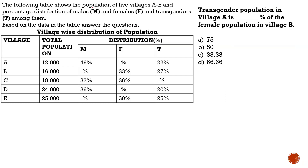The following table shows the population of five villages, A to E, and the percentage distribution of males, females, and transgender. There are five villages — A, B, C, D, E — with the population of each village listed, and the three categories: male, female, and transgender, shown as percentages of the population.